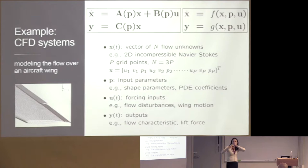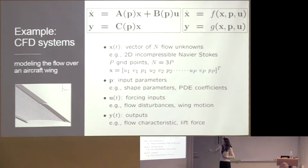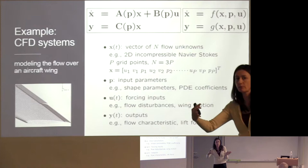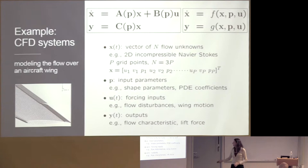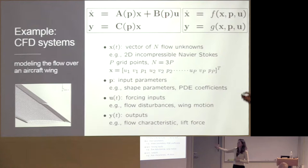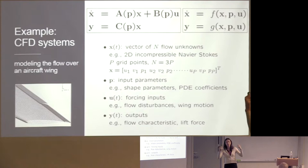The inputs U are typically things prescribed by boundary conditions — maybe the motion of the wing or some kind of disturbance. The parameters might describe the geometry of the wing — its shape — or coefficients of the PDE. The outputs of interest depend on what decision I'm trying to inform, but often they're integrated quantities: lift, drag, moments, or some flow characteristic. So we have a giant, expensive high-fidelity model, and what we're really interested in is the relationship between the inputs U and P and the output of interest Y.